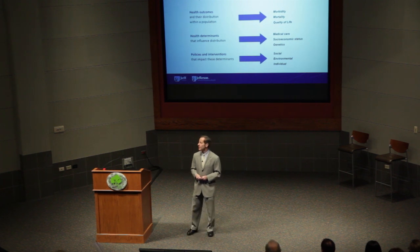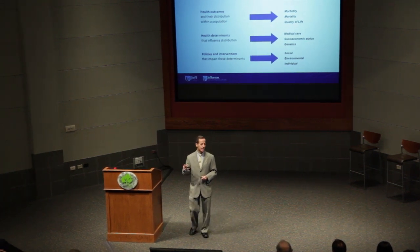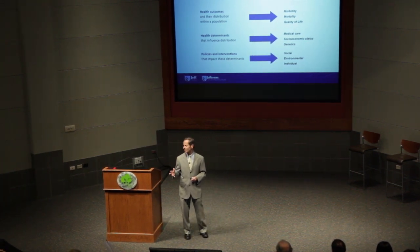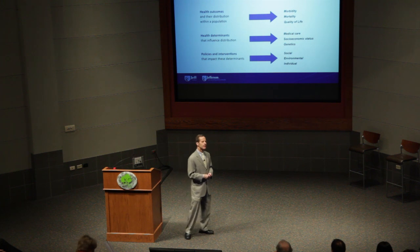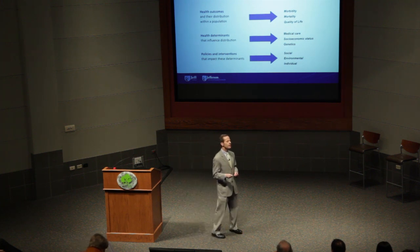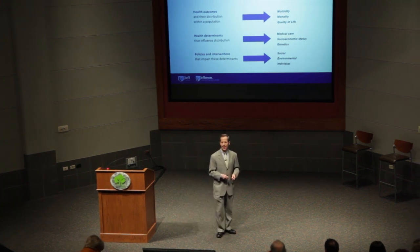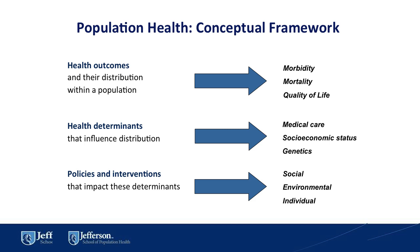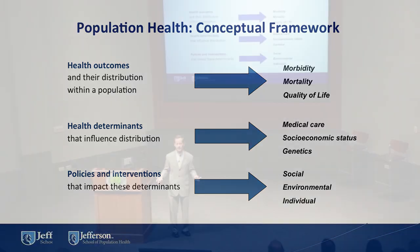The other determinants are socioeconomic status, crime, pollution, smoking, behaviors, and my favorite — of course — is choosing your parents wisely. Really important. The third tier says that policies and interventions influence these outcomes, like the Affordable Care Act.